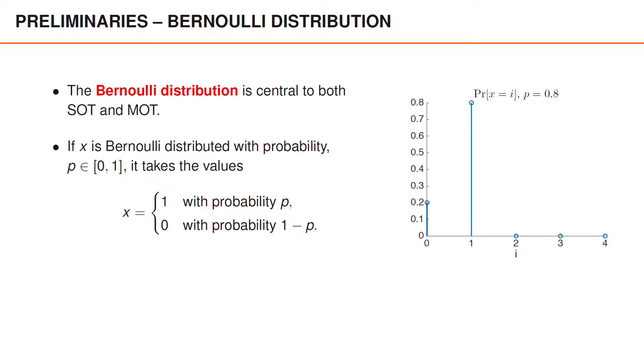In general, if x is Bernoulli distributed with probability p between 0 and 1, it takes the value 1 with probability p, and the value 0 with probability 1-p. If we look at the probability mass function of x, when p is 0.8, the probability that x is 0 is 0.2, the probability that x is 1 is 0.8, and the probability that it takes any other value, say 2, 3 or 4, is 0.